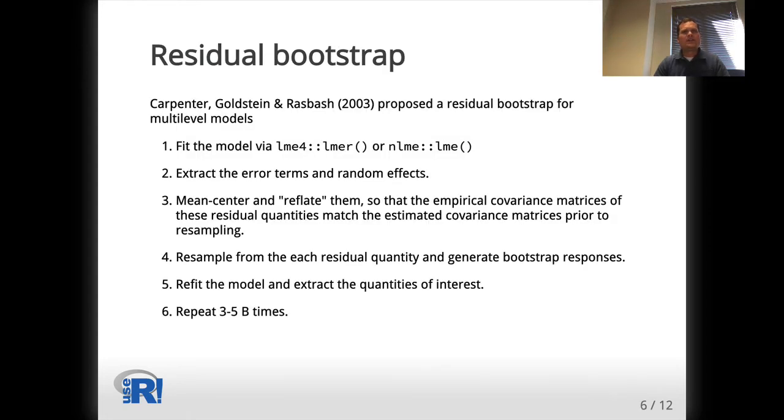If we suspect possible distributional misspecification in the model, then a robust alternative to typical parametric inference is the residual bootstrap that was proposed by Carpenter, Goldstein, and Rasbash. The bootstrap procedure is similar to the residual bootstrap from classical regression, but there are two types of residuals: so-called error terms or conditional residuals, and random effects.